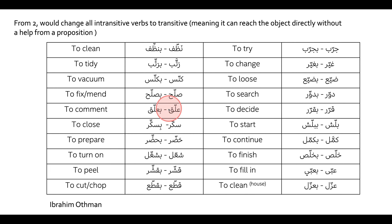More Form 2 verbs: saker/besaker, haddar/bhaddar, sha'al/bisha'al, ashar/b'ashar, and atta/b'atta'a. Now let's conjugate a verb — let's do 'ratab,' which means to tidy. Past tense: ana ratabit, enta ratabit, enti ratabti, entu ratabtu, nihne ratabna, huwe ratab, hiya ratabit, henne ratabu.